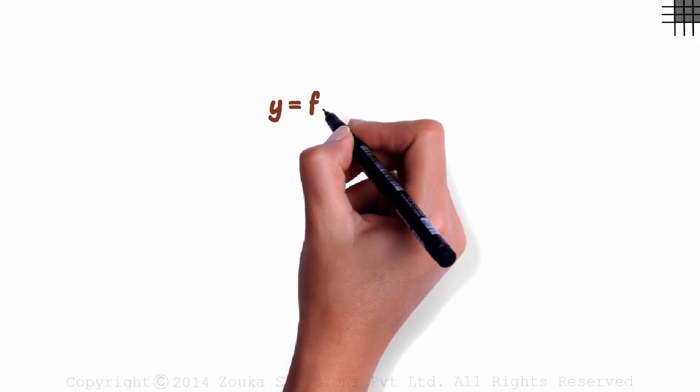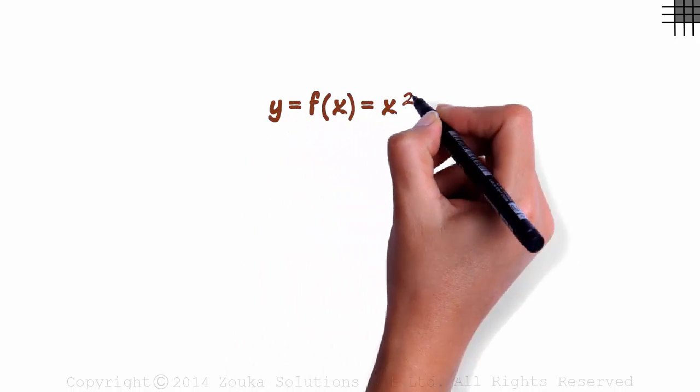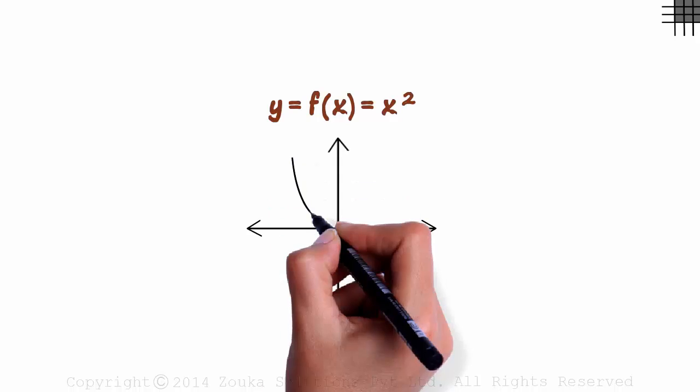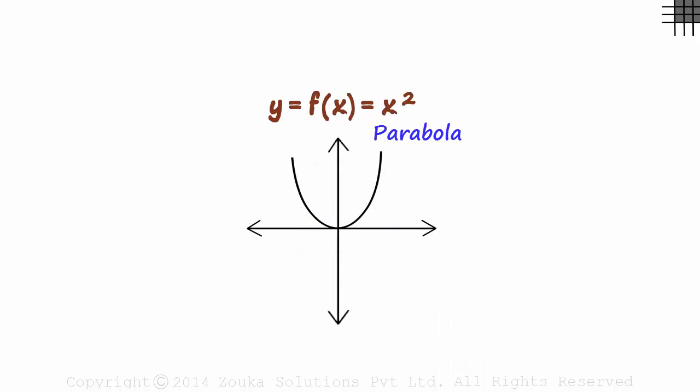In the previous session, we saw the graph of the function f(x) = x². It was a curve like this, a parabola. We substituted different values in place of x, got respective values for y, and plotted the points to get this graph. It touches the x-axis at the origin because when we substitute zero in place of x, we get the value of y or the function as zero.